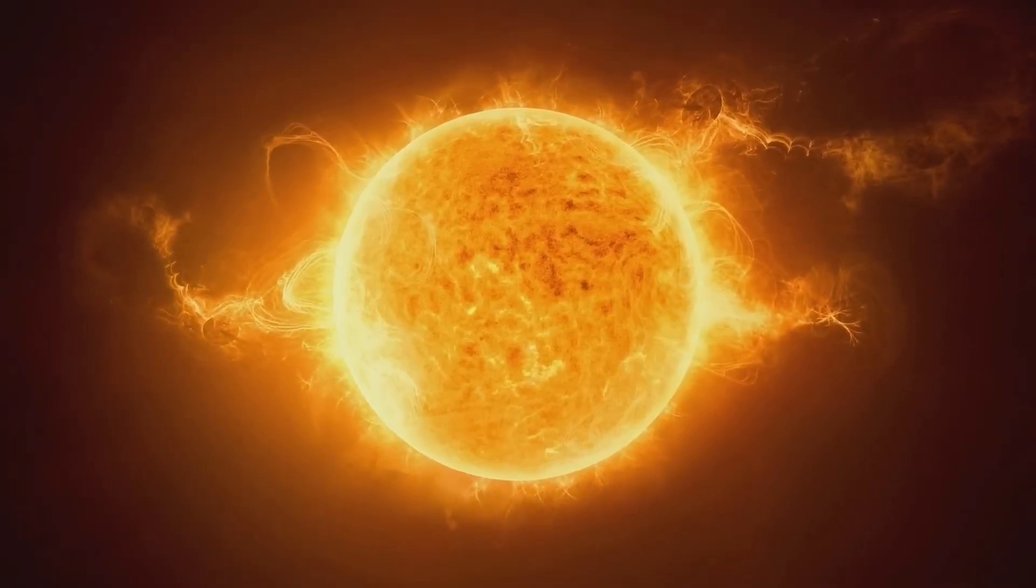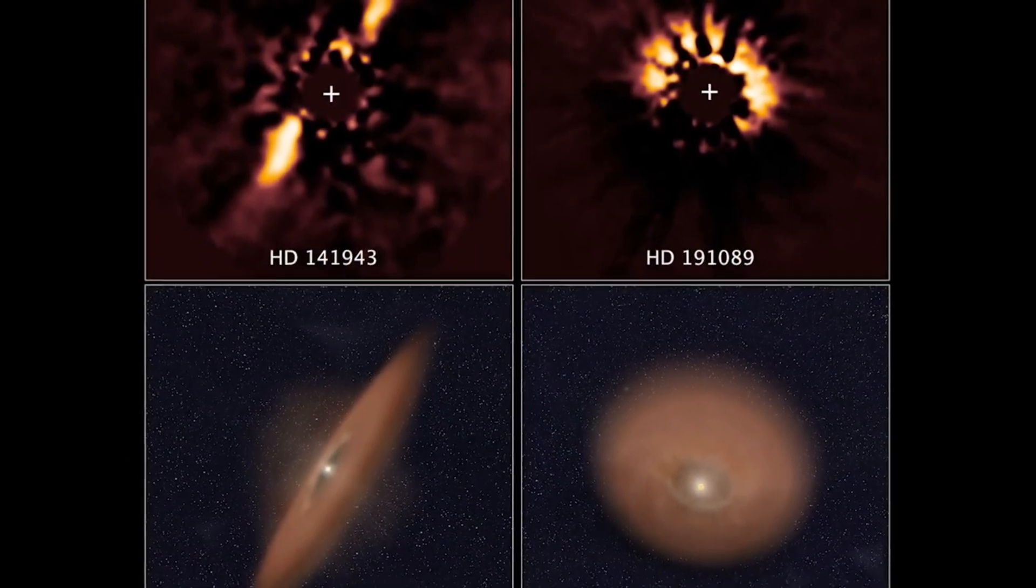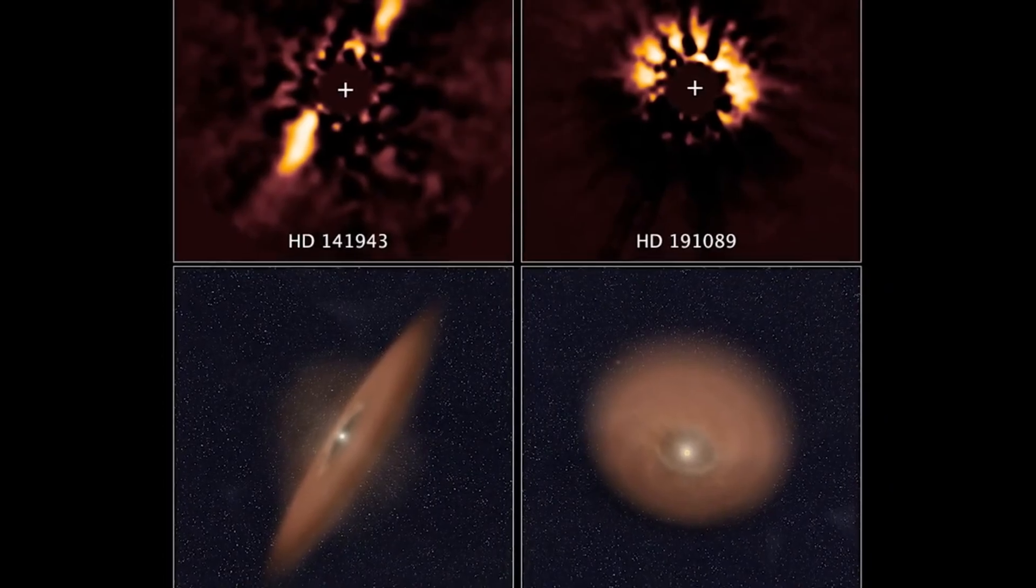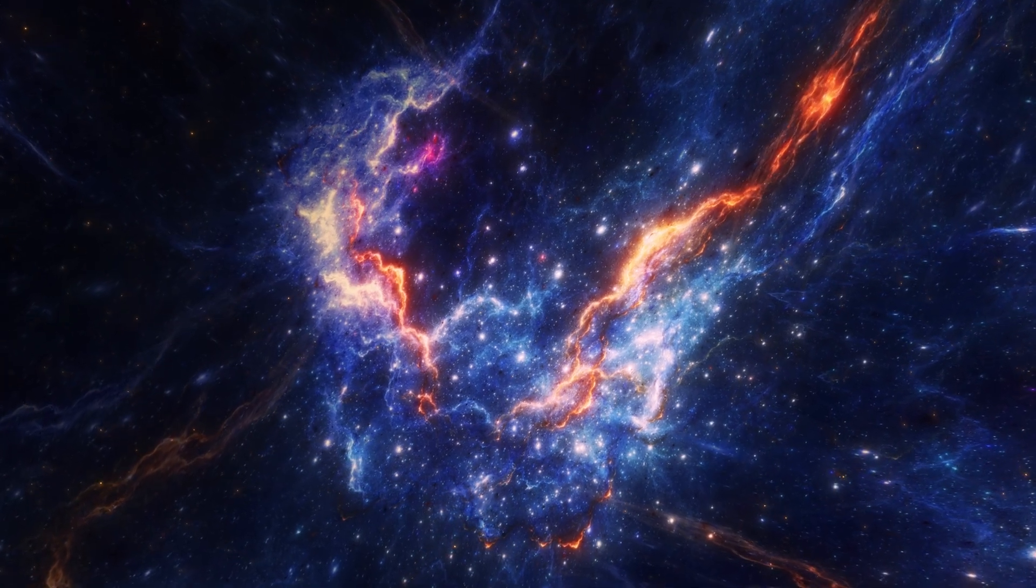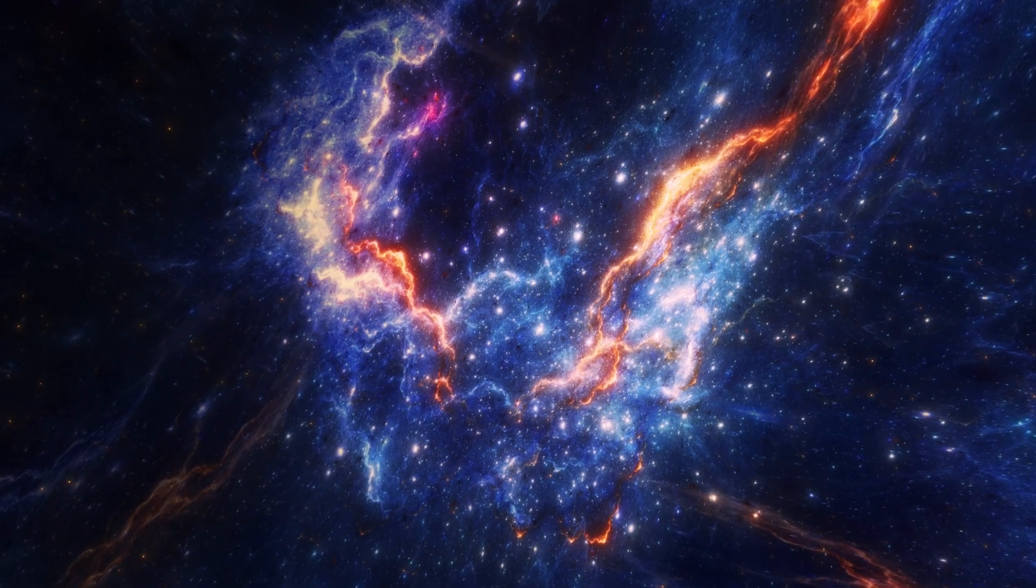Billions of years ago, this same principle applied to the material around the Sun, causing it to thin into a disk. Within this disk, small bodies known as planetesimals began forming due to collisions. Over time, these aggregations led to the creation of the planets as we know them today.